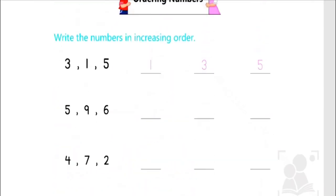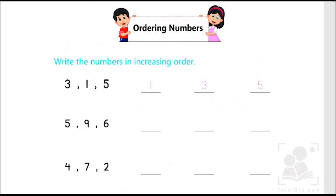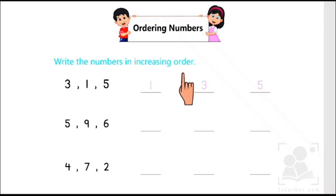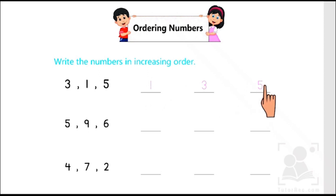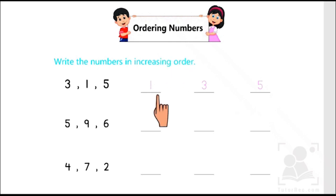The first part of this activity says: write the numbers in increasing order. When we say increasing order, it means the numbers are going to start from the smaller, ending at the greater ones. I hope you remember chapter number 4, where we covered the concept of smaller and greater numbers. Here we are going to practically apply that concept — increasing order starts from the lowest number, ending with the greatest.